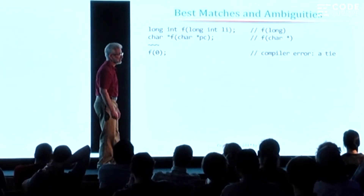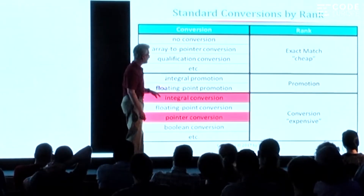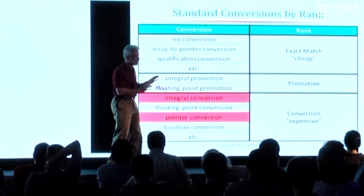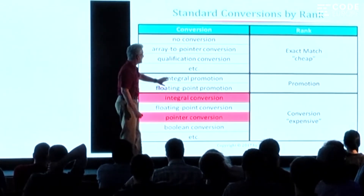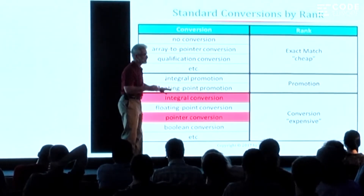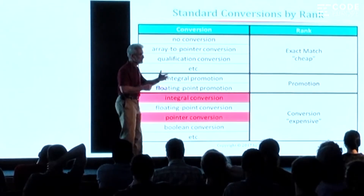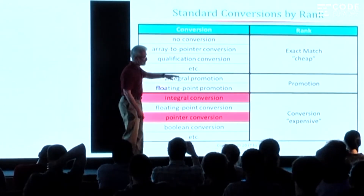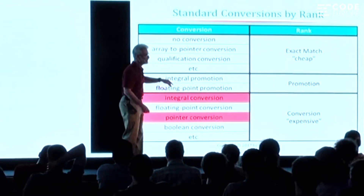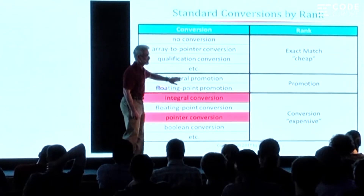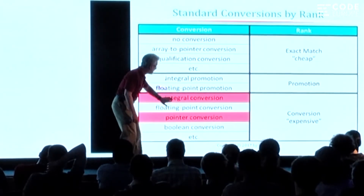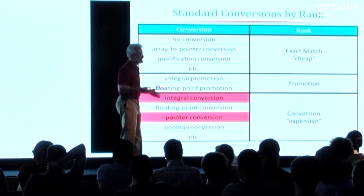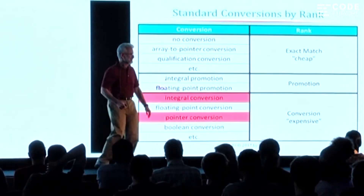What is the difference between a conversion and a promotion? The difference is more of a historical accident. In the early days of C, compilers did not like to pass things as arguments to functions as anything smaller than an int. So a promotion is the conversion of a char or short int to int — anything converted where the target winds up being an integer is an integral promotion. Anything that involves an integer larger than a plain int is an integral conversion, and those are more expensive.